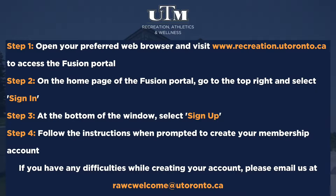How to create a ROCK membership account on Fusion. Step 1: open your preferred web browser and visit www.recreation.utoronto.ca to access the Fusion portal. Step 2: on the home page of the Fusion portal, go to the top right and select Sign In. Step 3: at the bottom of the pop-up window, select Sign Up.